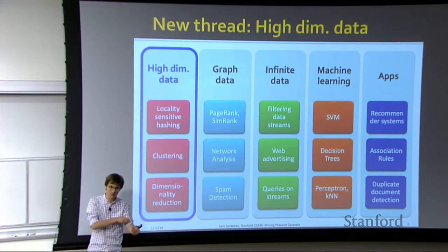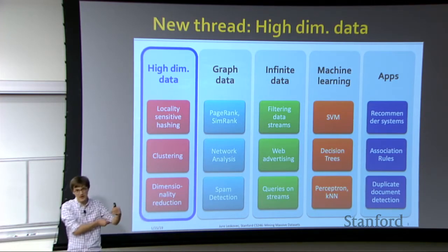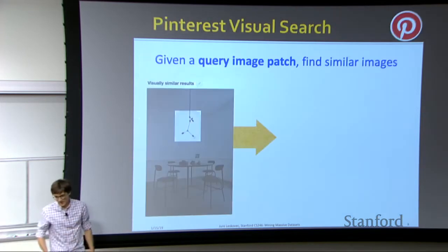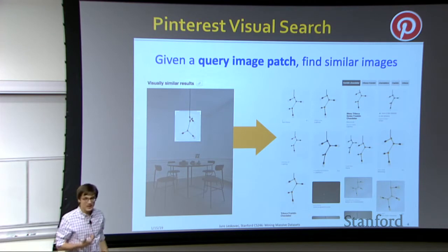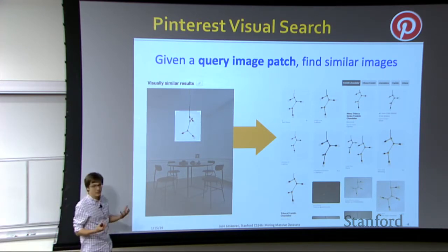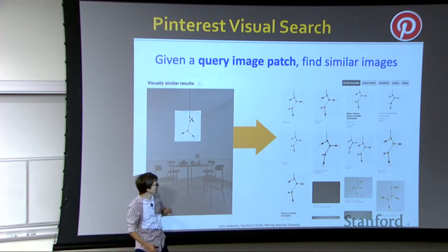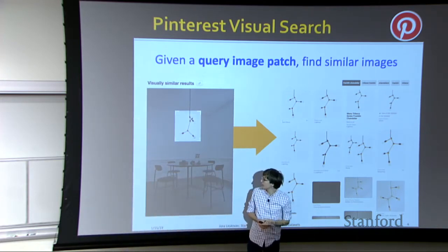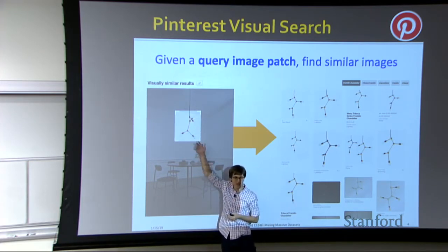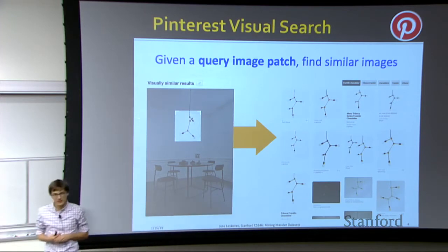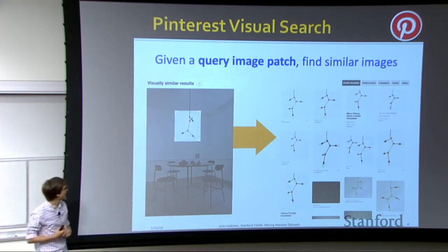Even though some of these things will be a bit more theoretical, they will serve as a basis to build principled recommender systems. That's where this is going. The task we'll talk about today is: how would you do image search? I have an image, I select a sub-part of it. You have a database of billions of images and very quickly, after I selected some sub-part, you want to give me the most similar images.